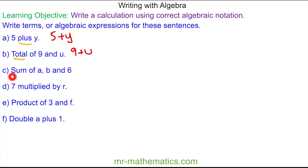For question c, the keyword now is sum, and it is the sum of a, b, and 6. Because a and b are not like terms, we add them separately, so a add b add 6.